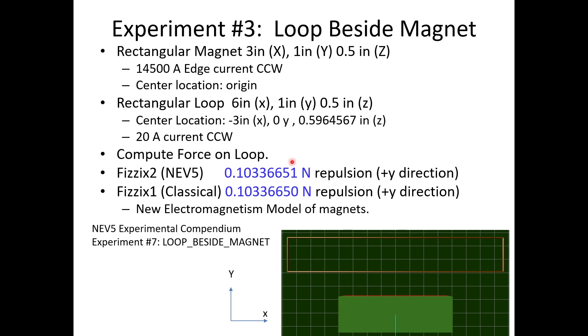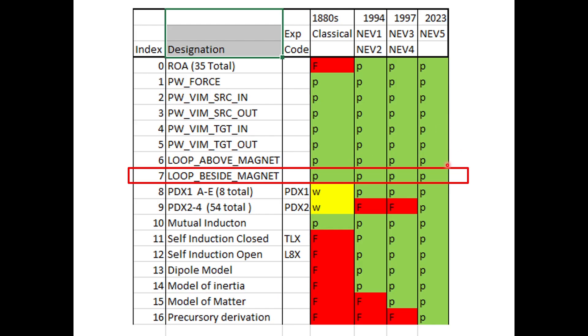This is experiment three. This is where we take that same loop and put it side by side with the magnet. We're looking for the repulsion in the Y direction. These are all the dimensions here. This experiment was also run. We should have an experiment code there, but I didn't develop the experiment codes until later. So I don't really, this is kind of the experiment code here.